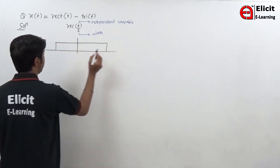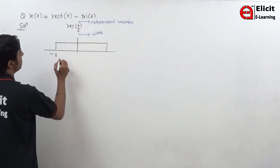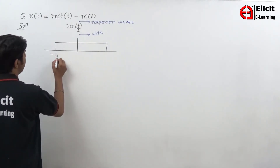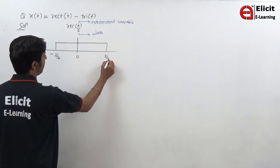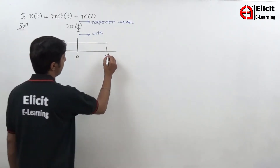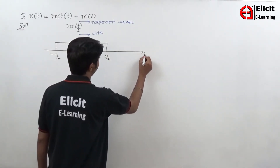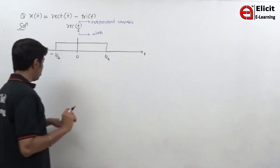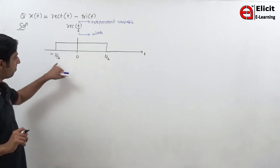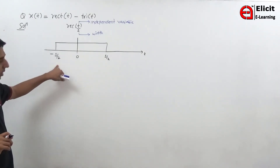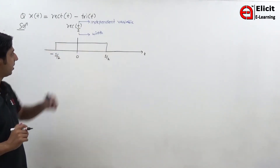Small t represents the independent variable, which is nothing but the x-axis. The 1 in the denominator basically represents the width. So for rect of small t, this is minus 1 by 2, this is 0, and this is 1 by 2, and this is small t. The width is 1 by 2 minus of minus 1 by 2, so the width remains 1.